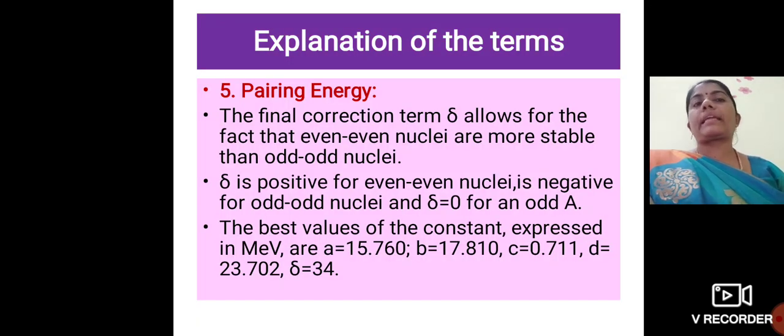Finally, the pairing energy. The term delta allows for the fact that even-even nuclei are more stable than odd-odd nuclei. Delta is positive for even-even nuclei, delta is negative for odd-odd nuclei, and delta is zero for odd A alone. The best values of the constants expressed in MeV are: a equals 15.76, b equals 17.81, c equals 0.711, d equals 23.702, and delta equals 34.